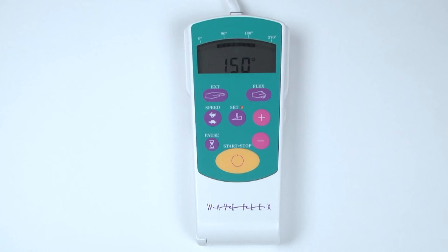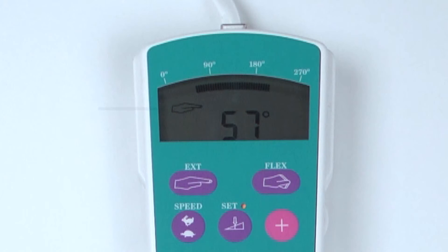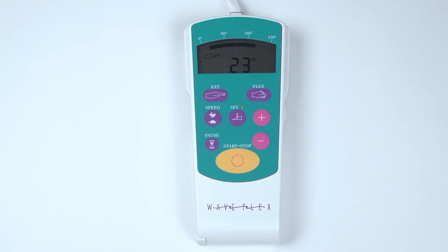To program extension, press the Extension button. The LCD screen will display the extension icon and the currently programmed extension setting. Change the setting by pressing the plus or minus button to increase or decrease the setting.